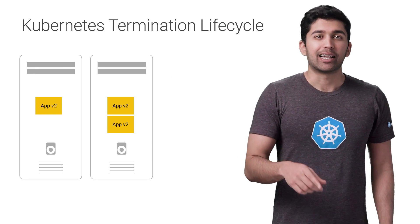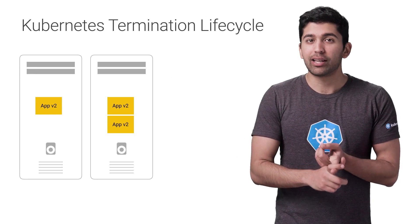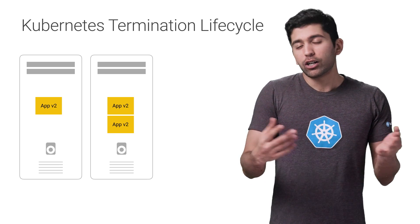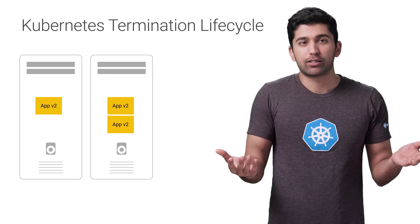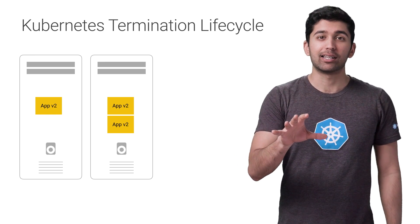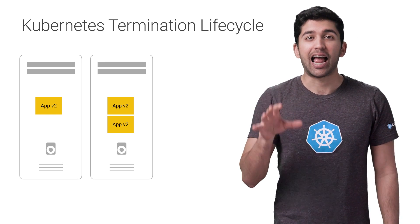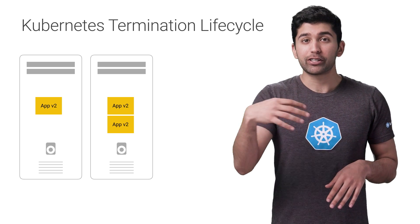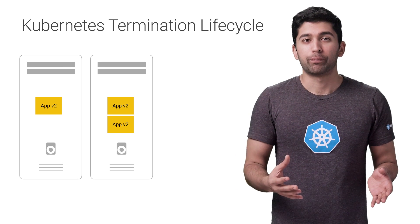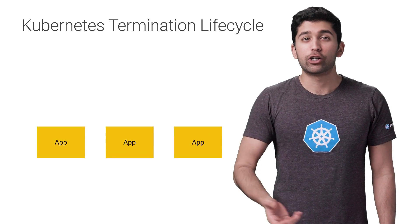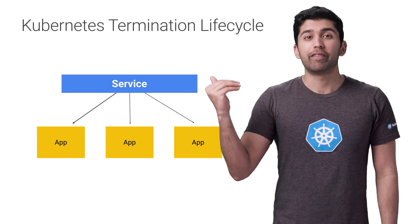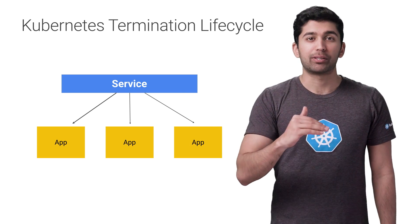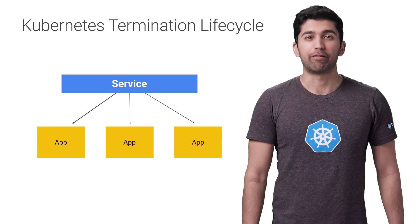This means that your application should save all the data that needs to be saved, close down any network connections, finish any work that's left, and other similar tasks. In practice, this means your application needs to handle the SIGTERM message. When it receives this message, it should begin to shut down. Once Kubernetes decides to terminate your pod, a series of events takes place. Let's look at each one of these steps in the Kubernetes termination lifecycle.